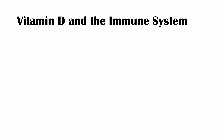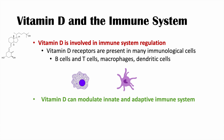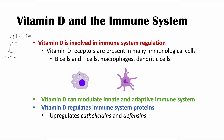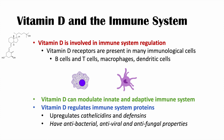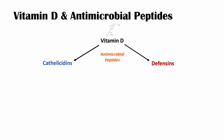So how does vitamin D actually protect against respiratory tract infections? Vitamin D is involved in immune system regulation, and vitamin D receptors are present in many immunological cells, including B cells, T cells, macrophages, and dendritic cells. By activating these vitamin D receptors, vitamin D can modulate innate and adaptive immune system function. It does this by upregulating immune system proteins like cathelicidins and defensins. These antimicrobial proteins have antibacterial, antiviral, and antifungal properties, as described in the article on the vitamin D antimicrobial peptide pathway and its role in protection against infection.